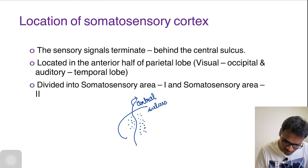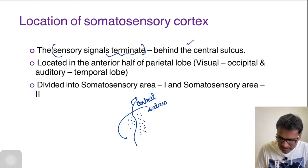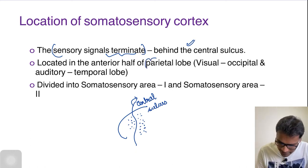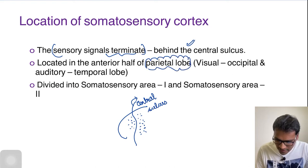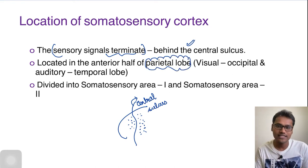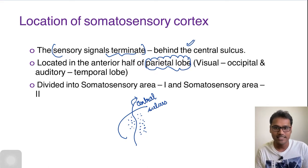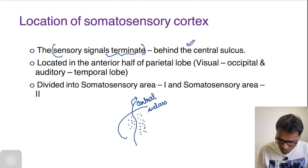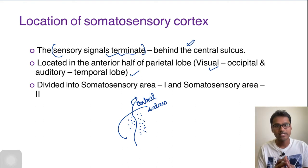The sensory signals terminate just behind the central sulcus. It is exactly located in the parietal lobe of the brain. All the somatic sensations from the body reach the parietal lobe, whereas special sensations like vision go to the occipital region and auditory — that is hearing — goes to the temporal cortex. These will be discussed in the special senses series.